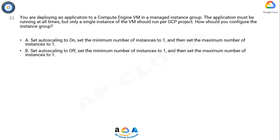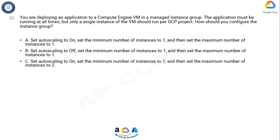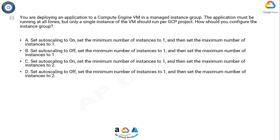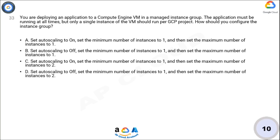Option C: configure a single stack driver account and link all projects to the same account. Option D: set auto scaling to off, set the minimum number of instances to one, and set the maximum number of instances to two. Now take 10 seconds to think about the answer.